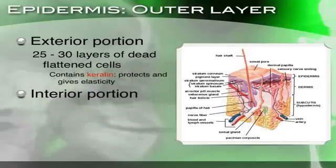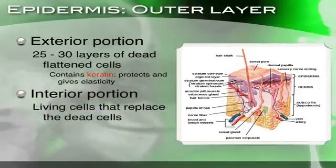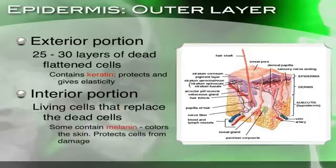Then we have the interior portion of the epidermis, which is made up of living cells that replace the dead cells on the surface. Because we're shedding cells all the time, we have living cells beneath that replace the dead cells. Some of these living cells contain melanin, which is a pigment that colors the skin and also protects cells from damage.